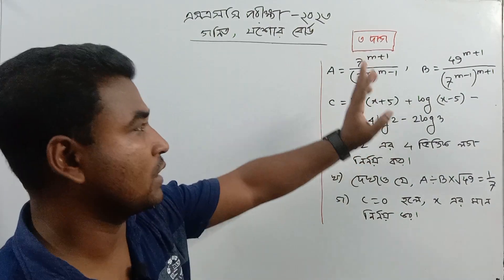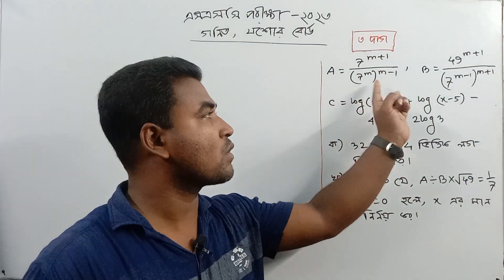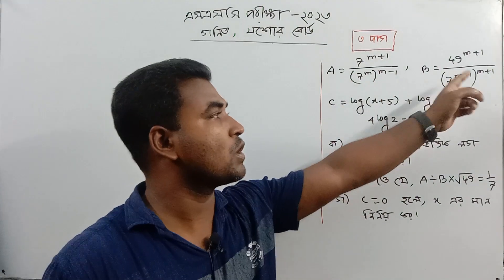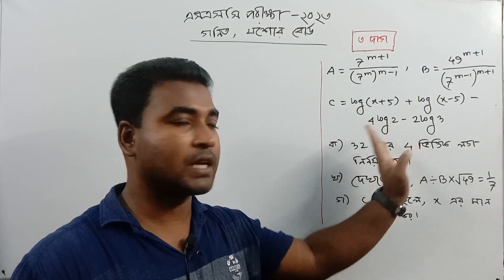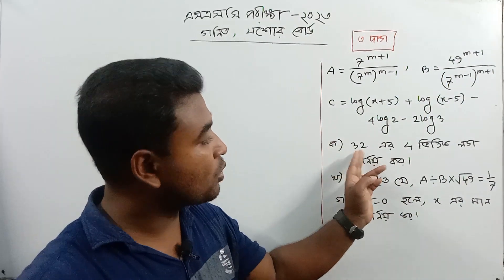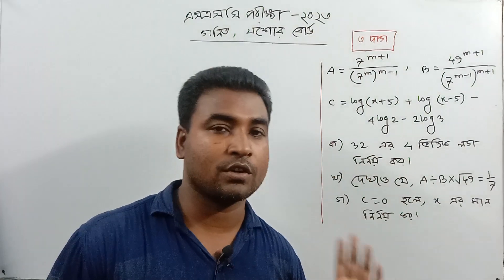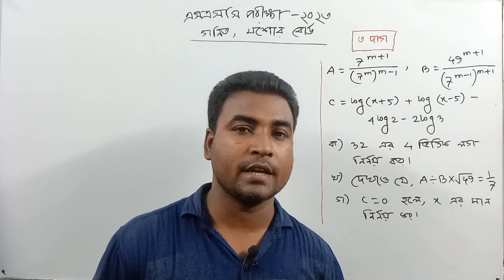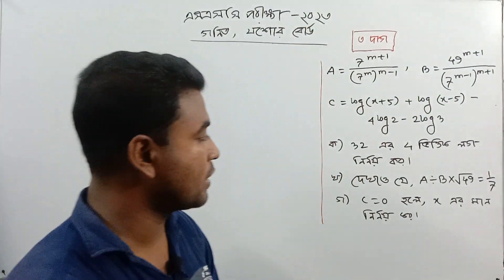The answer is 3. The answer is: a equal to a, b equal to a, and c equal to a squared. The answer is 4.5. The answer is 4.5 log.